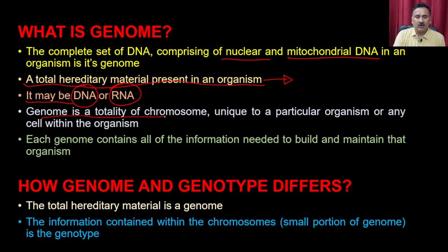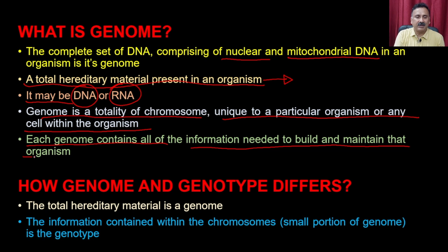The genome is the totality of chromosomes unique to a particular organism or any cell within the organism. Each genome contains all of the information needed to build and maintain that organism. There are two important points: first, it is the hereditary material present inside an organism; second, it contains all the information needed for an organism to build and maintain itself, including information about developmental stages.